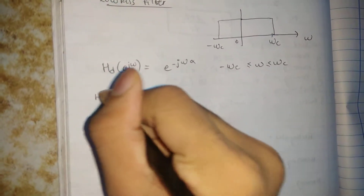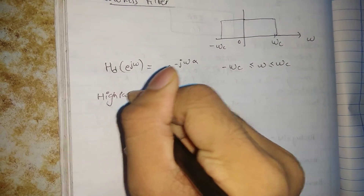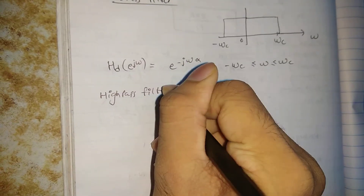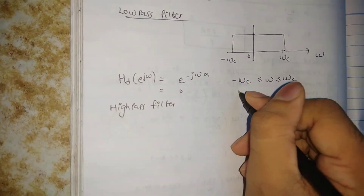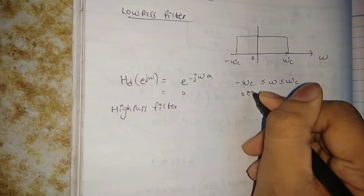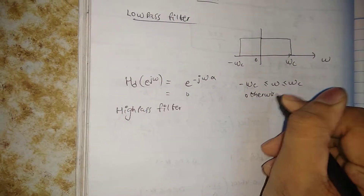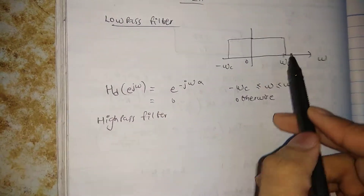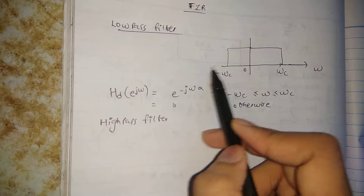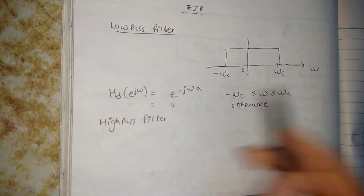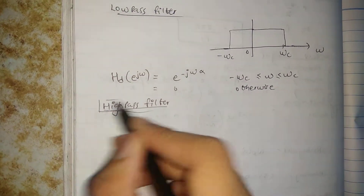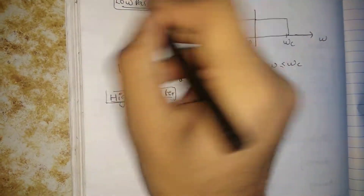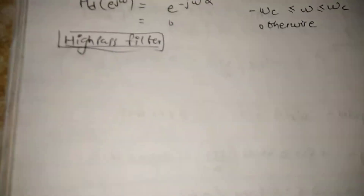Now talking about the high pass filter — equal to 0 otherwise. There is no need to mention it separately because it is considered 0 in those regions. So now let's talk about the high pass filter design.